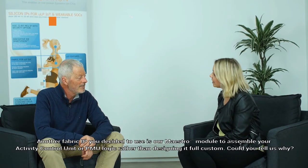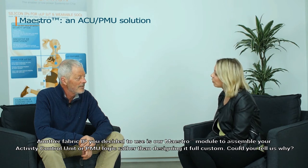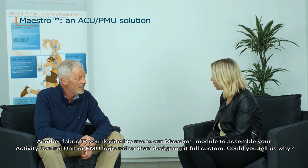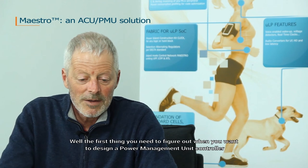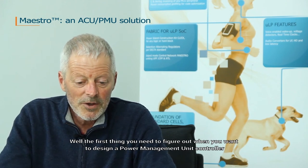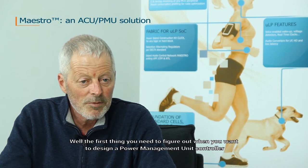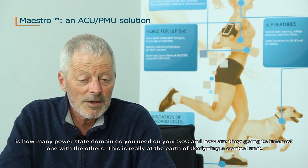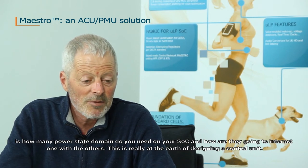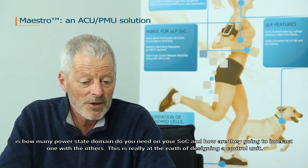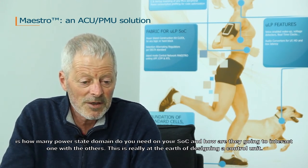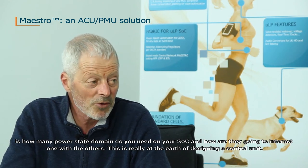Another fabric IP you decided to use is the MAESTRO module to assemble your activity control unit, or PMU logic, rather than designing it full custom. Could you tell us why? The first thing you need to figure out when you want to design a power management unit controller is how many power state domains you need on your SOC and how they are going to interact with one another. This is really at the heart of designing a control unit.